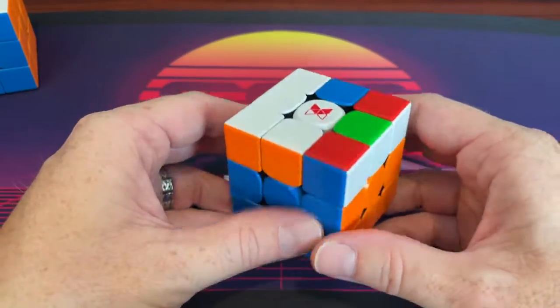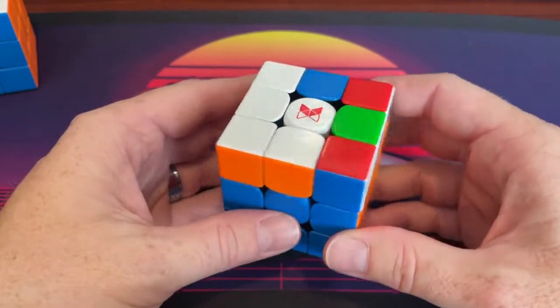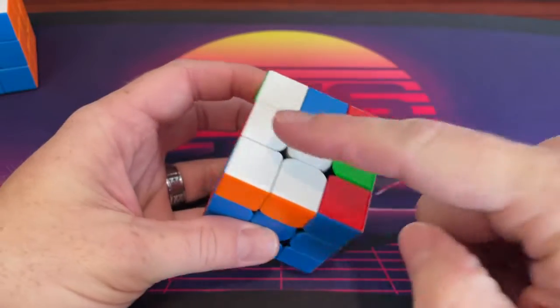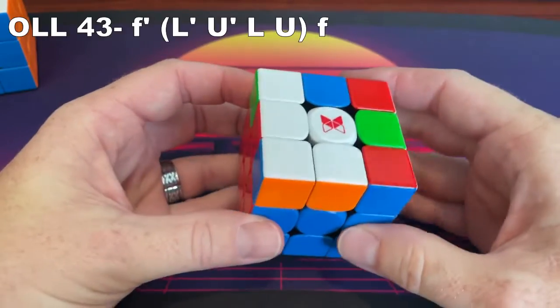OLL 43 is the lefty version of sexy move. Again, this 1x3 bar is opposite the shape, and it goes like this.